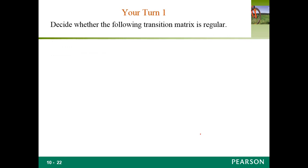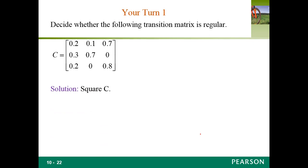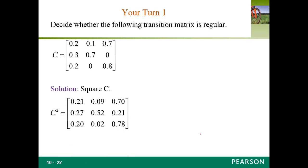So now we want to decide whether the following transition matrix is regular. It's a square matrix. We take the second power, and since all of the entries are positive, C is regular. That's all we have to do.